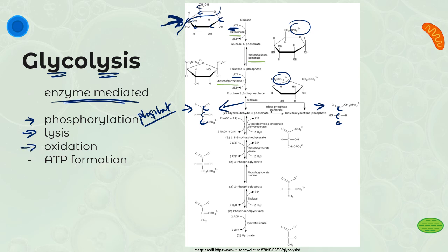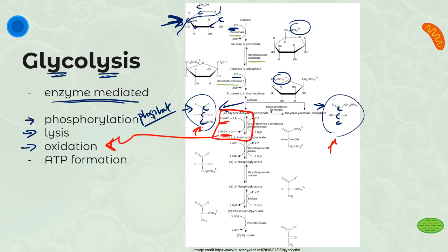We also have some oxidation. These two three-carbon chunks are going to lose some electrons. Those electrons and the protons that get lost are picked up by the amazing NAD+, which is reduced — gaining those electrons to become NADH and H+. So we grab onto those electrons and protons that are lost by these three-carbon pieces of glucose and turn that into NADH. That's the oxidation of the three-carbon glucose pieces, and also the reduction of NAD+ to NADH+H+.